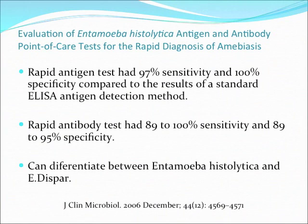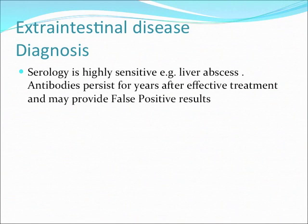This article tells how good the diagnosis is when you use a rapid antigen test. According to this article, you can have a sensitivity of 90% and a specificity of 100% compared to results from a standard ELISA antigen detection. If you use antibodies to detect it, you can have a sensitivity of 89% to 100% and a specificity of 89% to 95%. Using serology, you can differentiate between Entamoeba histolytica and E. dispar, which you cannot do with microscopy alone. For extra-intestinal disease like liver abscess, serology is even better because you produce more antibodies.